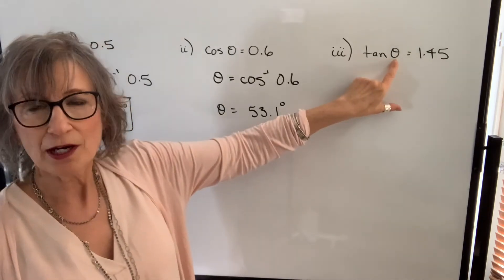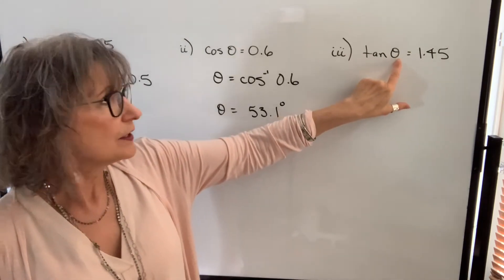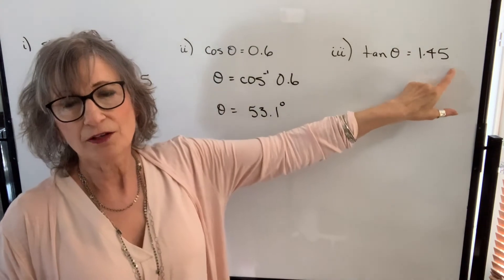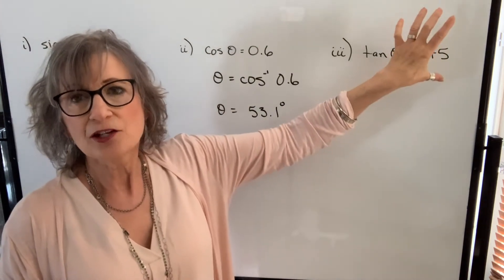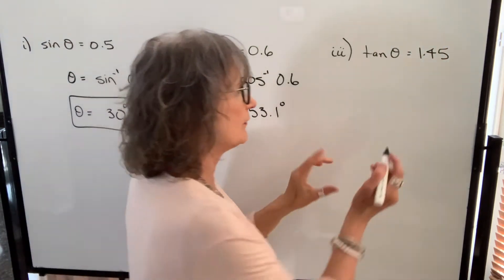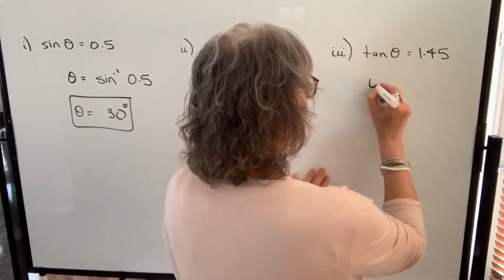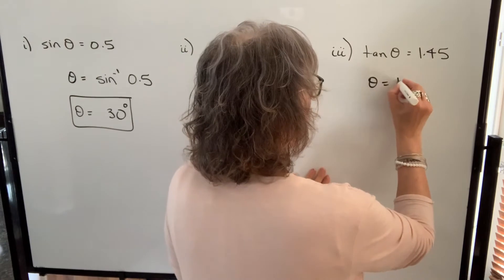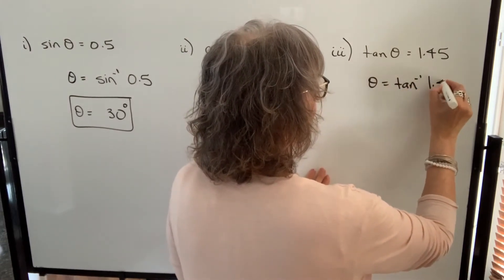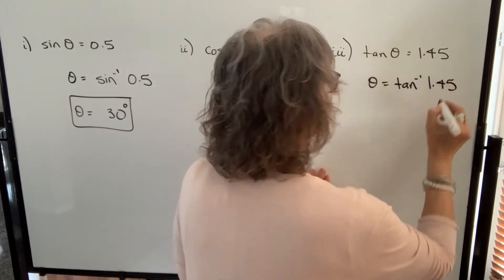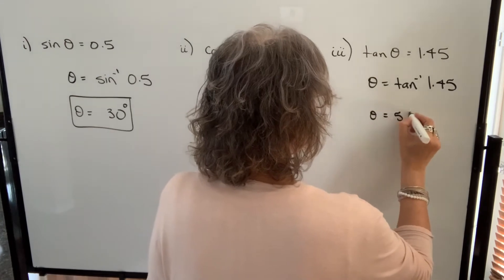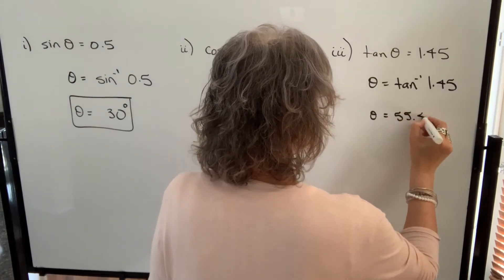We don't know our angle, so we're not finding the tangent of 1.45 — the tangent ratio is equal to 1.45. In order to find the angle, we take the inverse tan of 1.45, and you should get an angle of 55.4 degrees.